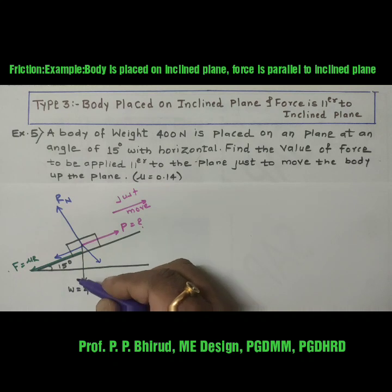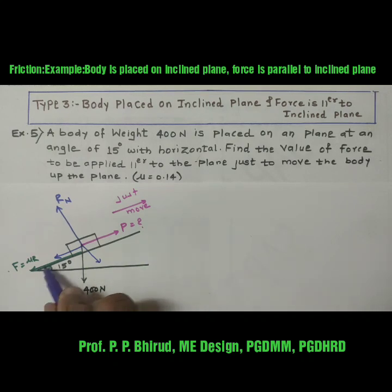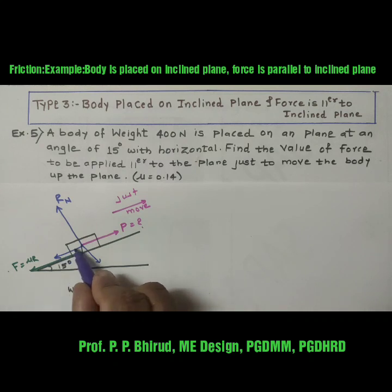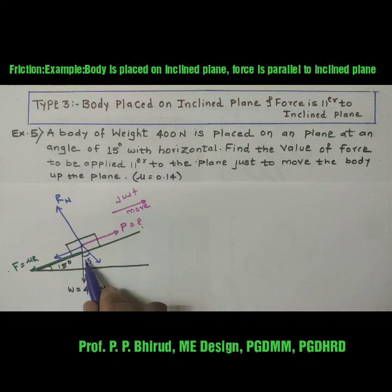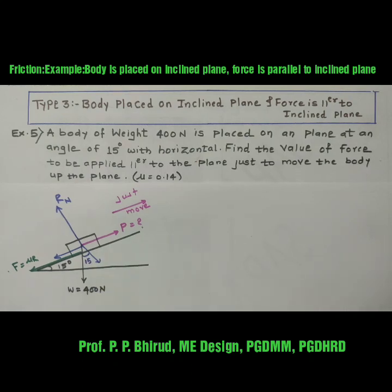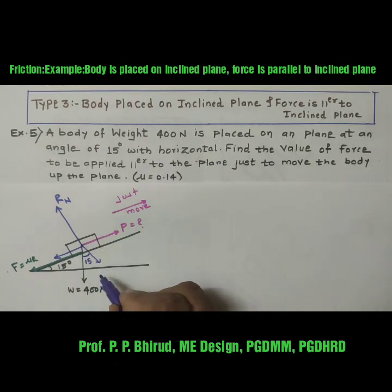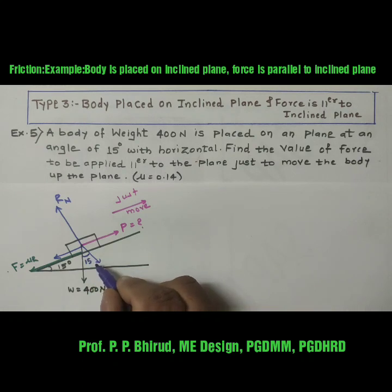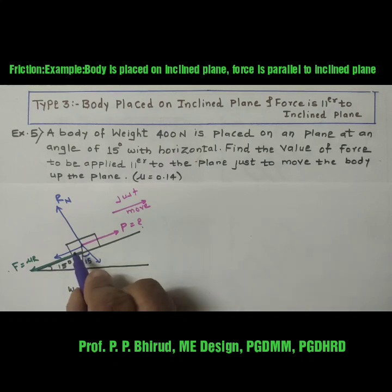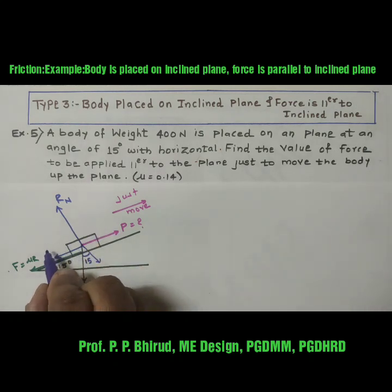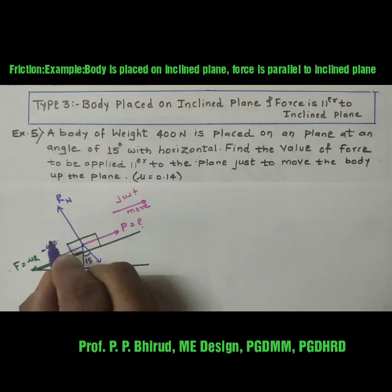For that, we require the angle made by W. Using trigonometry on the right angle triangle, the remaining angle is 75 degrees. Since this is also 90 degrees, the remaining angle will be 15 degrees — so this angle will be 15 degrees. W is making 15 degrees with the Y axis. Since W is in the third quadrant, the horizontal component becomes minus 400 sin 15.